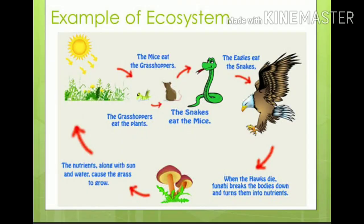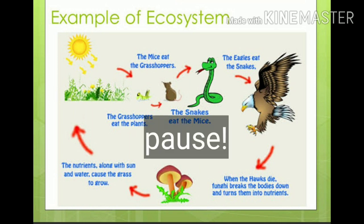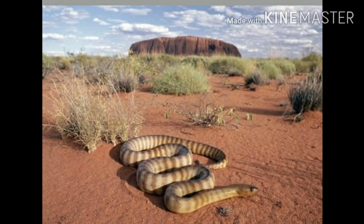Let's talk about the ecosystem. An ecosystem consists of all living and non-living things in a specific natural setting. An example of an ecosystem is shown on the screen — please pause the video for a few seconds to understand it better. An ecosystem has many types.